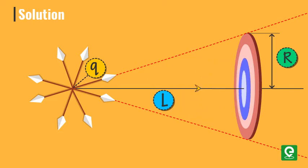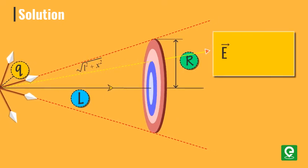We are calculating the flux through this element because electric field due to charge at various points of the disk is non-uniform. Now at the location of this element, the electric field will be in the radially outward direction and magnitude of electric field can be written as k q divided by distance square, which is l square plus x square.